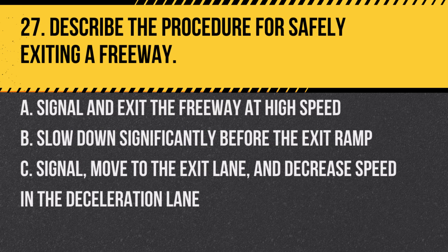Question 27. Describe the procedure for safely exiting a freeway. A. Signal and exit the freeway at high speed. B. Slow down significantly before the exit ramp. C. Signal, move to the exit lane, and decrease speed in the deceleration lane. Answer: C. Signal, move to the exit lane, and decrease speed in the deceleration lane. This ensures a safe and smooth exit from the freeway.